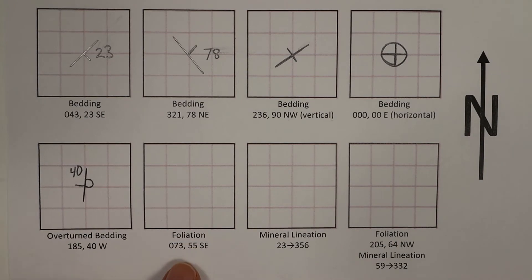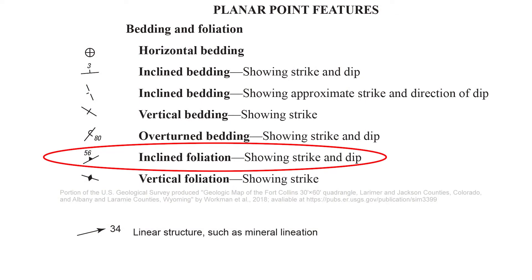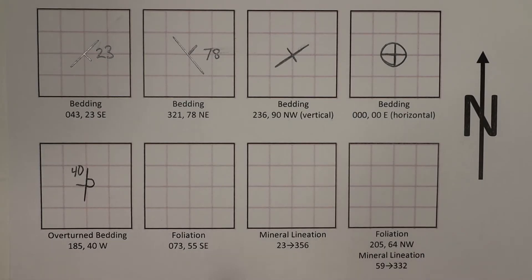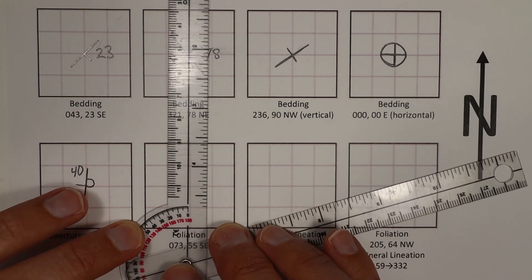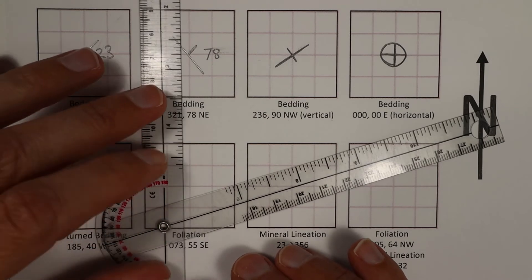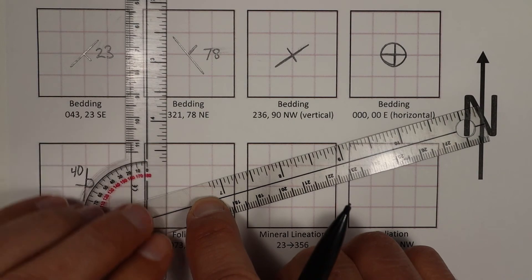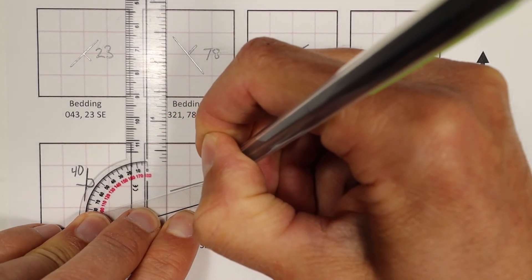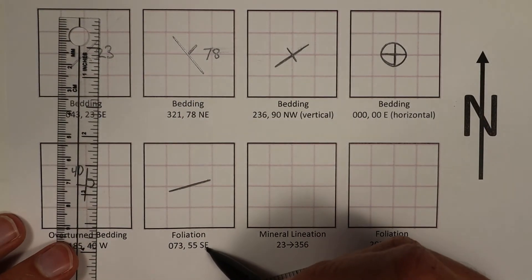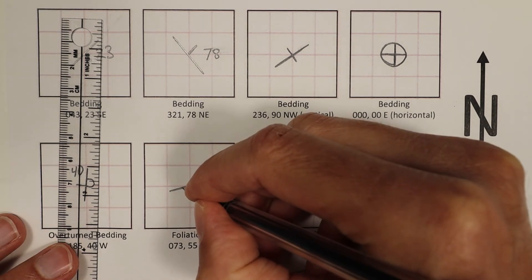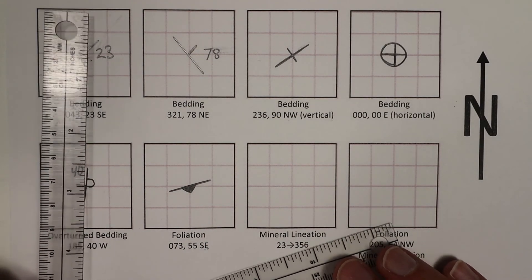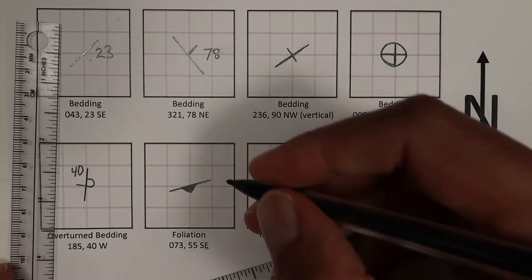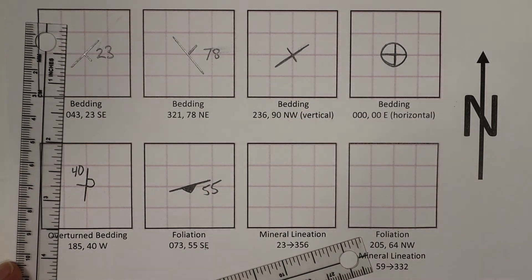The next example is foliation, which we find in metamorphic rocks. The symbol is similar to bedding except the dip direction indicator is a filled-in triangle. For a strike of 073, we count up 73 degrees clockwise from north, move the goniometer so the base is north-south, and draw the strike line. The dip direction is southeast, so I draw a triangle and fill it in. Then we fill in the dip orientation of 55 degrees.